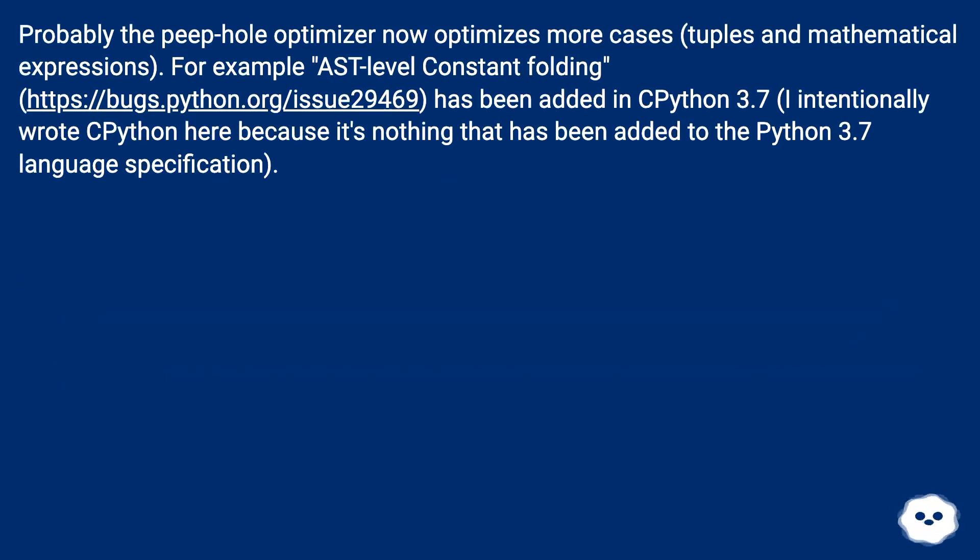Probably the peephole optimizer now optimizes more cases: tuples and mathematical expressions. For example, AST-level constant folding (this URL) has been added in Python 3.7. I intentionally wrote CPython here because it's nothing that has been added to the Python 3.7 language specification.